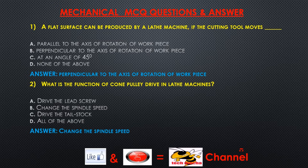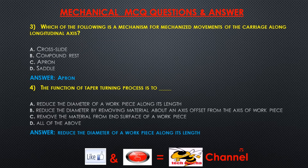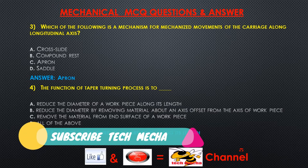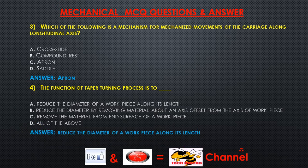Question 3: Which of the following is a mechanism for mechanized movements of the carriage along the longitudinal axis? A) cross slide, B) compound rest, C) apron, D) saddle. Answer: Apron.